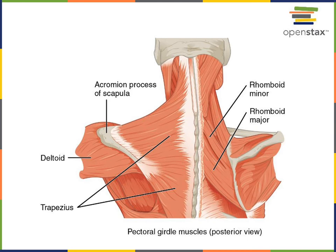Here we can see the trapezius is a large triangular shaped superficial muscle on the posterior of the cervical and thoracic regions. The trapezius has the action of elevating and depressing the pectoral girdle depending on whether the superior or inferior regions of the trapezius are contracting — these two major regions have opposite actions.